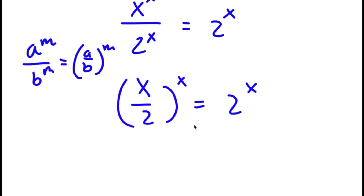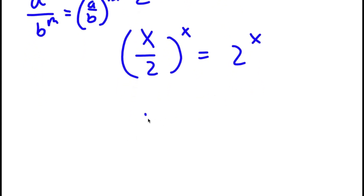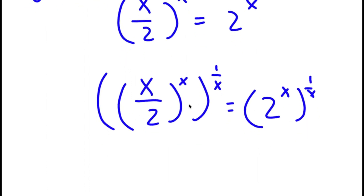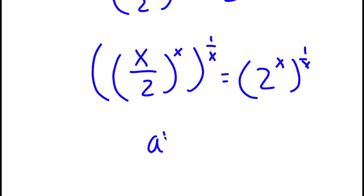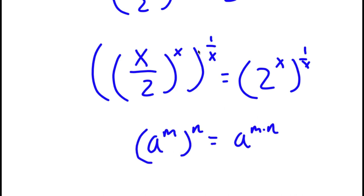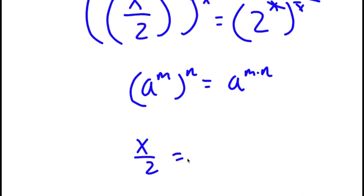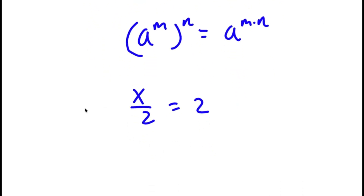Now I'm going to take the power of 1 over x on both sides. So I have x over 2 to the power of x to the power of 1 over x is equal to 2 to the power of x to the power of 1 over x. If I have a to the power of m to the power of n, this equals a to the power of m times n. So x times 1 over x cancel out, and again these cancel out, leaving me with x over 2 is equal to 2.